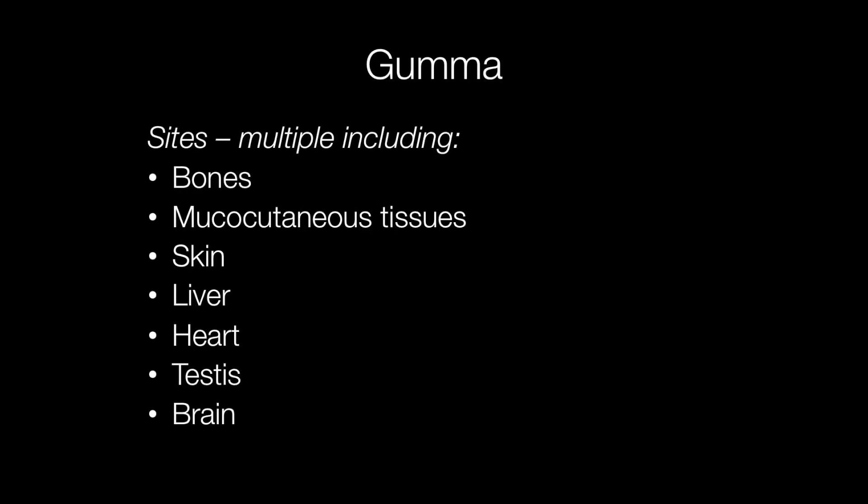Gummas arise in all sorts of sites including the bones, mucocutaneous tissues such as the tongue, skin, liver, heart, testis and brain.